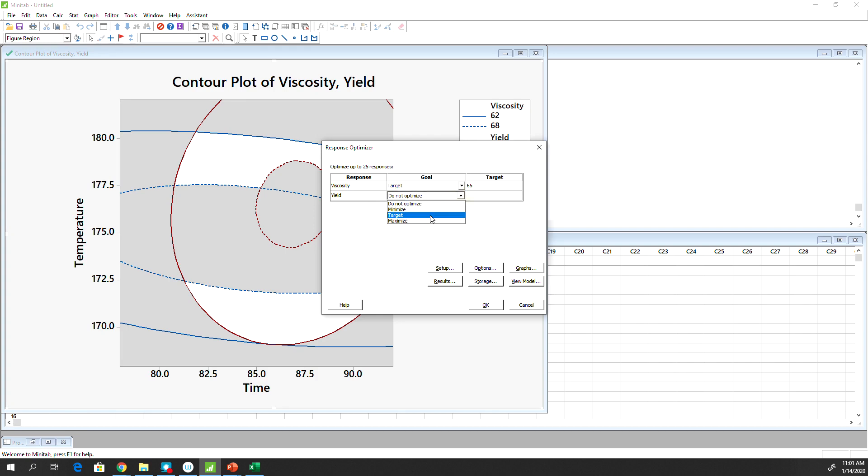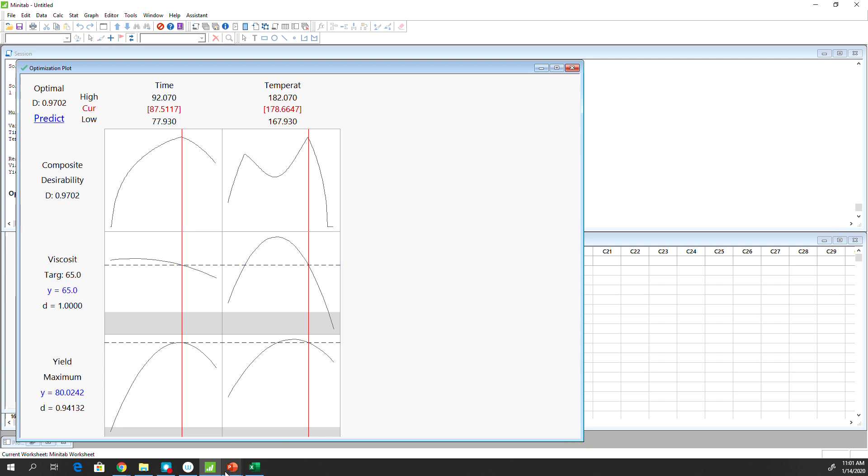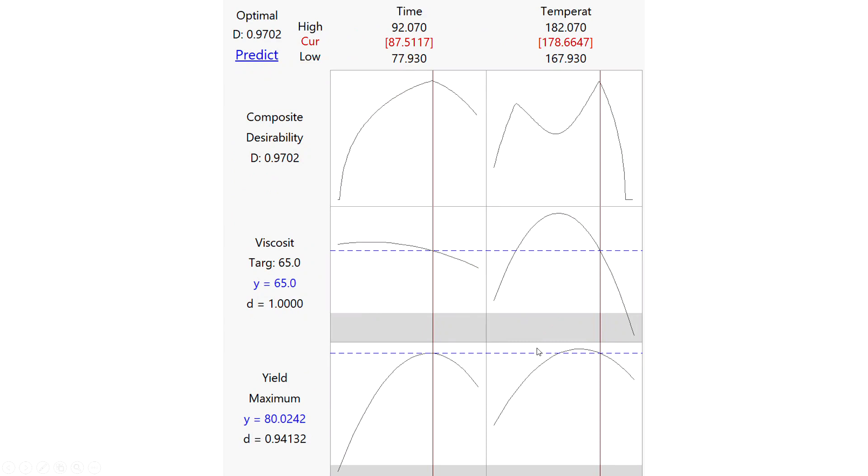So we don't have to do anything. I'll keep everything just as it is. So this is the plot. Let's go to my, so here is this graph that I have produced in the Minitab optimizer. As you can see, the time is around 87.5 is the most optimum value. And then the temperature is around 178.66.